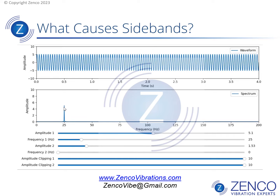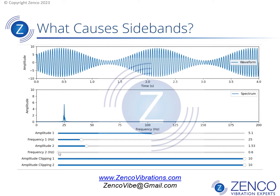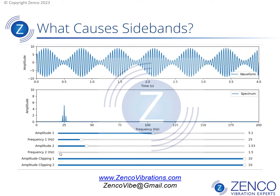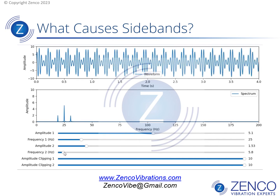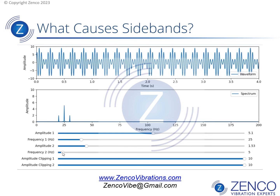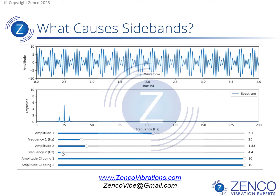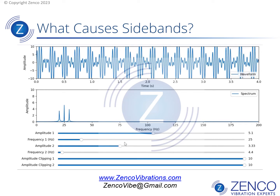What causes sidebands? At the top we have a sine wave; at the bottom we have a single peak. Now I'm modulating the amplitude of that peak, which means I'm making it get repetitively louder and softer. That creates sidebands in the spectrum. Now I'm increasing the frequency of modulation, and you see the sidebands move further away.